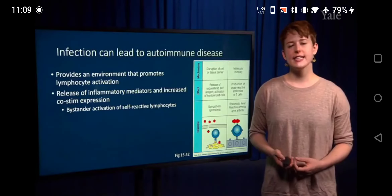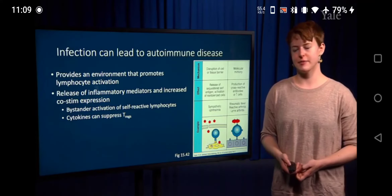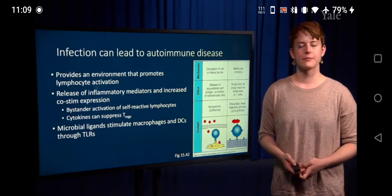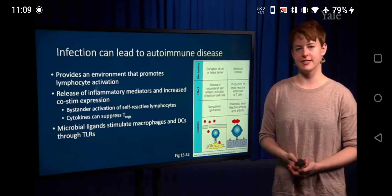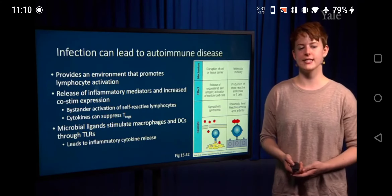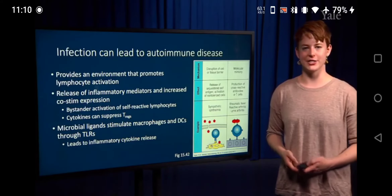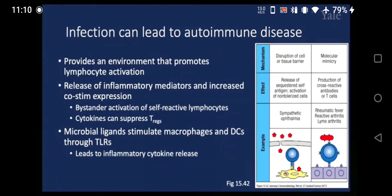Cytokines can also suppress regulatory T-cell function. Microbial ligands stimulate parts of the innate immune system such as macrophages and dendritic cells through TLR receptors, leading to overall inflammatory cytokine release. We talked earlier about tissues that are sequestered from the immune system — if you have disruption of that barrier, this can lead to release of self-antigen that typically is sequestered and may not have been used to eliminate self-reactive cells. An example is diseases of the eye, where an eye injury can lead to an autoimmune response that attacks the eye.